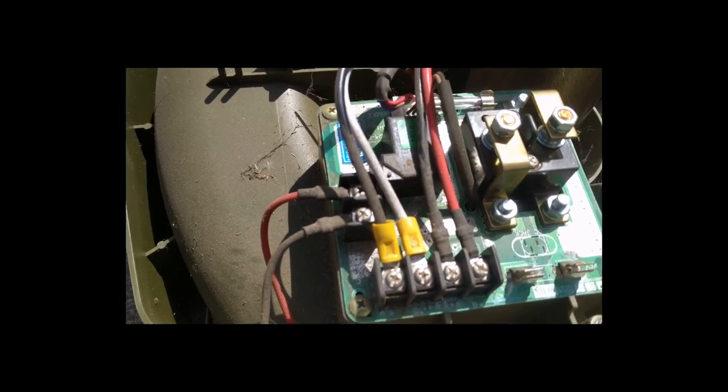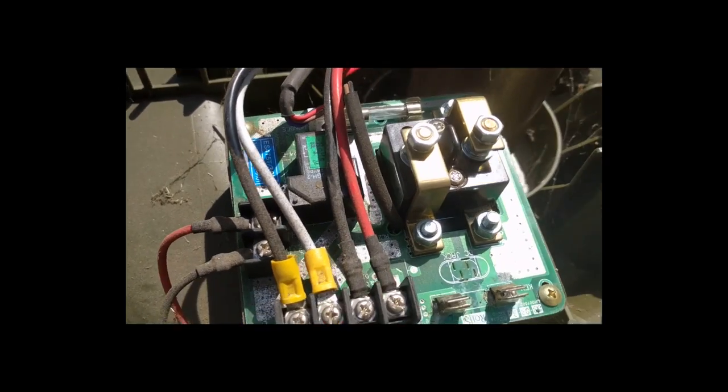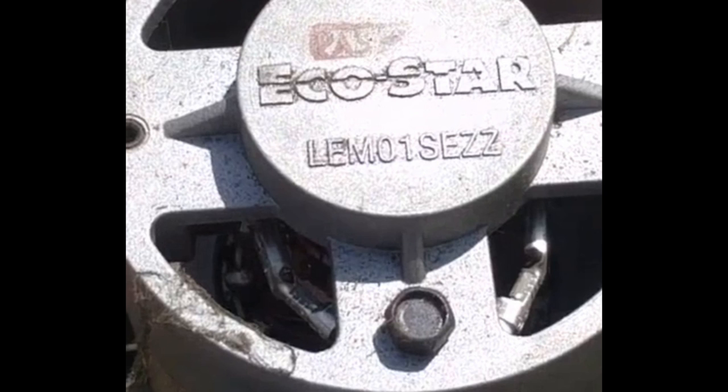I looked up this Newton lawnmower LEM01SEZZ electric motor and it's actually a 24 volt direct current motor. For long-term usability I think I might drop my battery pack to maybe 40 volt and see how that fares.